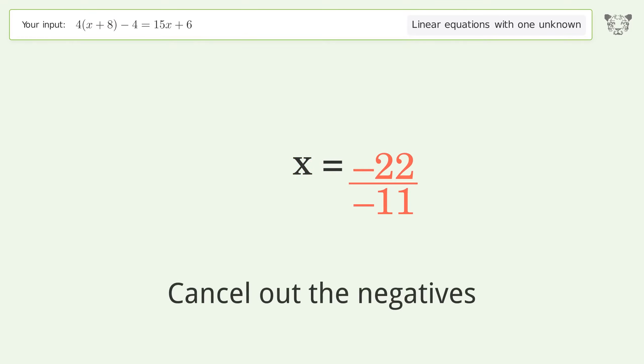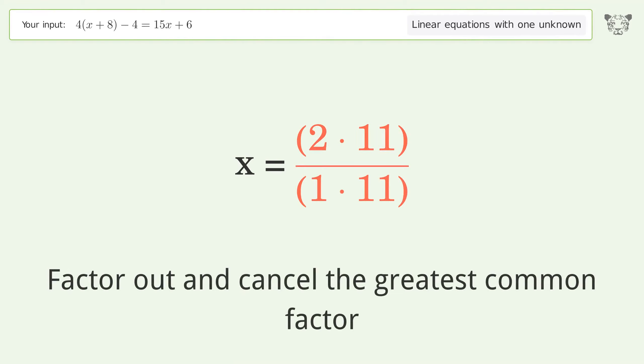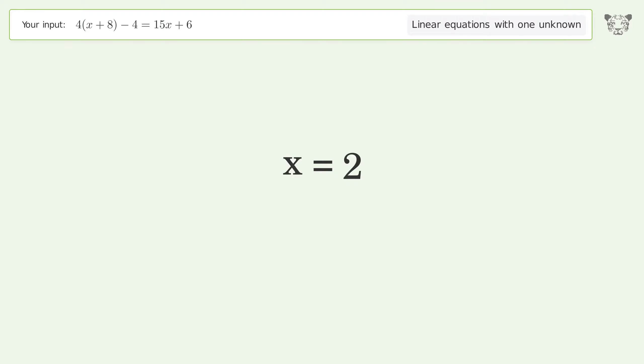Cancel out the negatives. Find the greatest common factor of the numerator and denominator, then factor out and cancel the greatest common factor. And so the final result is x equals 2.